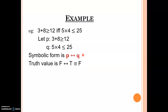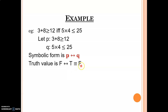Example: '3 + 8 ≥ 12 if and only if 5 × 4 ≤ 25.' The connective is 'if and only if', so this is a biconditional. Let P be '3 + 8 ≥ 12' and Q be '5 × 4 ≤ 25'. The symbolic form is P if and only if Q. Now the truth value of P: 3 + 8 = 11, and 11 ≥ 12 is false, so truth value of P is false. For Q: 5 × 4 = 20, and 20 ≤ 25 is correct, so truth value of Q is true. Therefore false if and only if true is false.